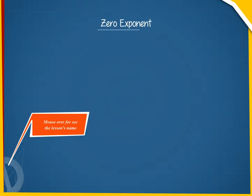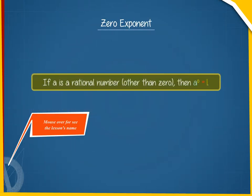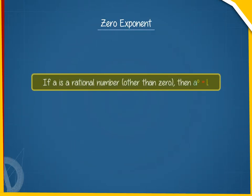Zero exponent. If a is a rational number other than zero, then a raised to the power zero is equal to one.